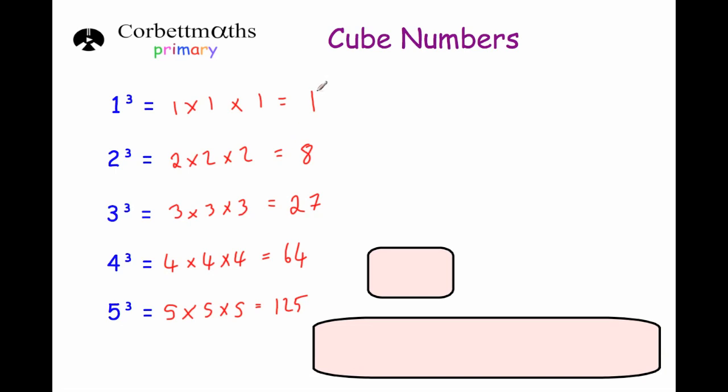So these are the first 5 cube numbers. They are 1, 8, 27, 64, and 125.